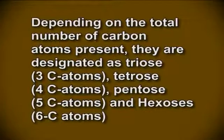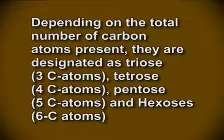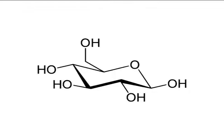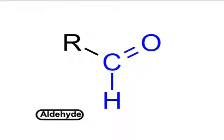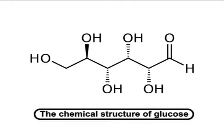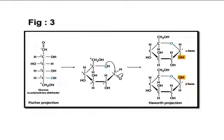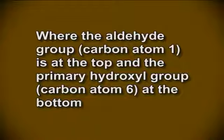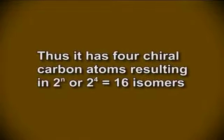Depending on the total number of carbon atoms present, monosaccharides are designated as triose (3 carbons), tetrose (4 carbons), pentose (5 carbons), and hexose (6 carbons). Glucose is one of the simplest and most abundant carbohydrates and is an aldose. The chemical structure of glucose in a straight-chain fashion, known as the acyclic structure or Fischer projection, is shown in Figure 3, where the aldehyde group at carbon atom 1 is at the top and the primary hydroxyl group at carbon atom 6 is at the bottom. It has four chiral carbon atoms, resulting in 2⁴ or 16 possible isomers.